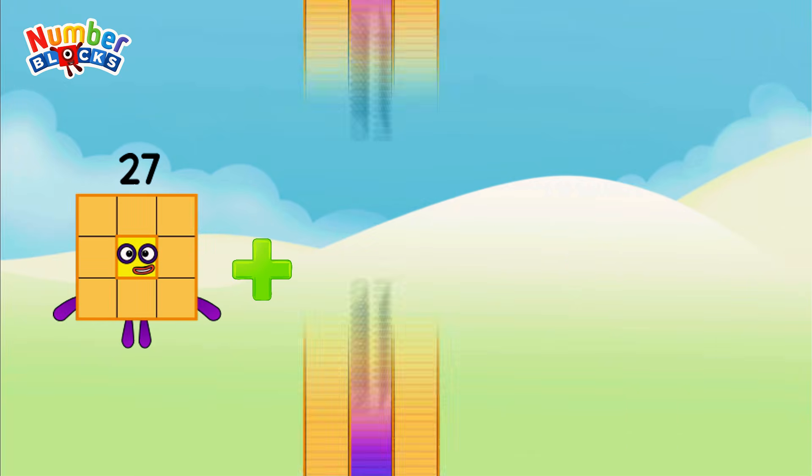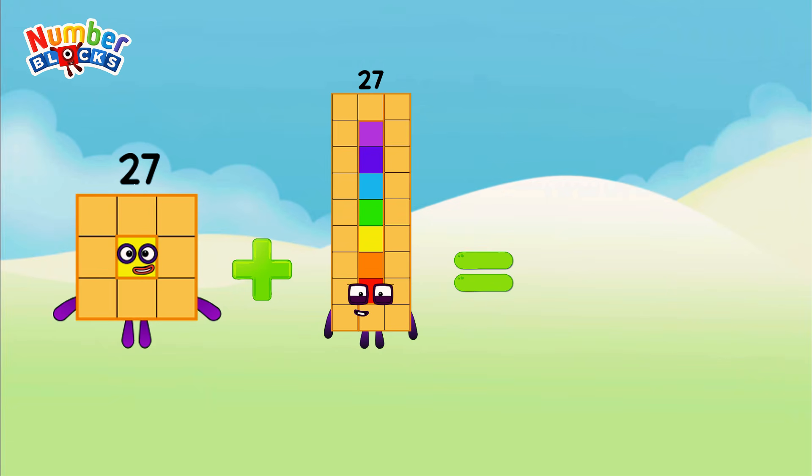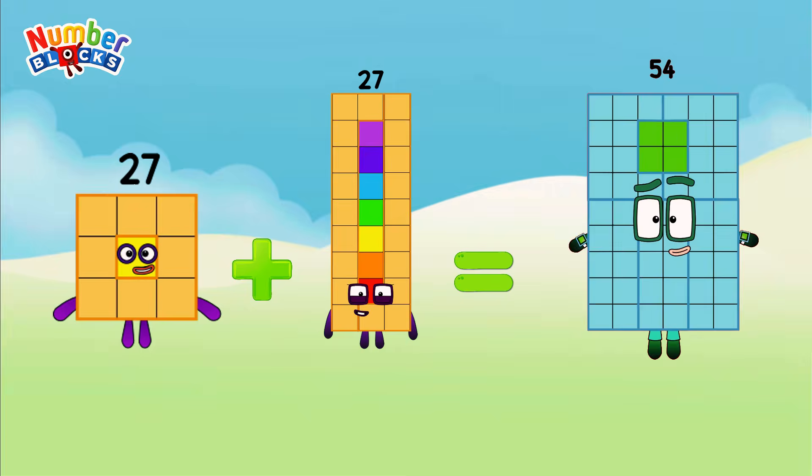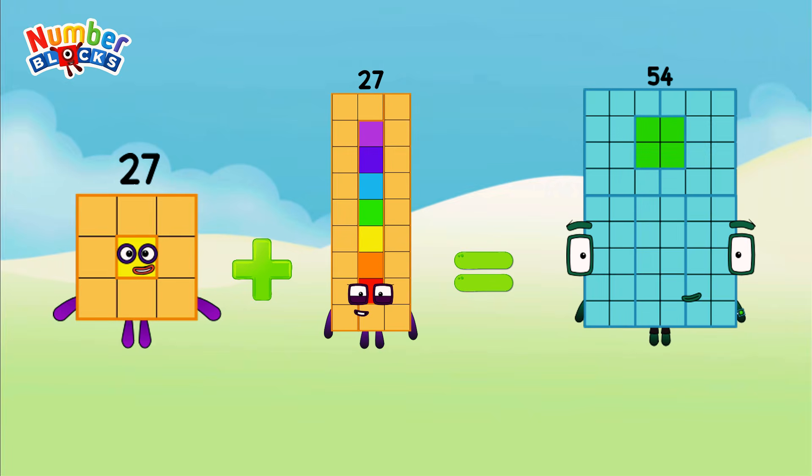27 plus 27 equals 54. Or 3 cube plus 3 cube equals 54.